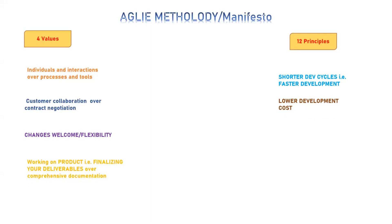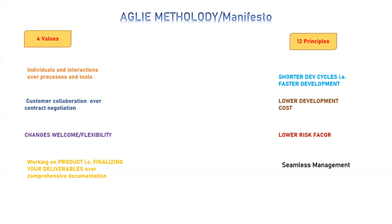The fourth value is working software over comprehensive documentation. In the old traditional workflow, the main focus was on preparing documents — specifications, requirement gathering, planning — and getting approval on that plan. With Agile, the focus was on understanding how much we can deliver and then documenting and approving that. This helped lower the risk factor and enabled seamless communication between different teams and management.